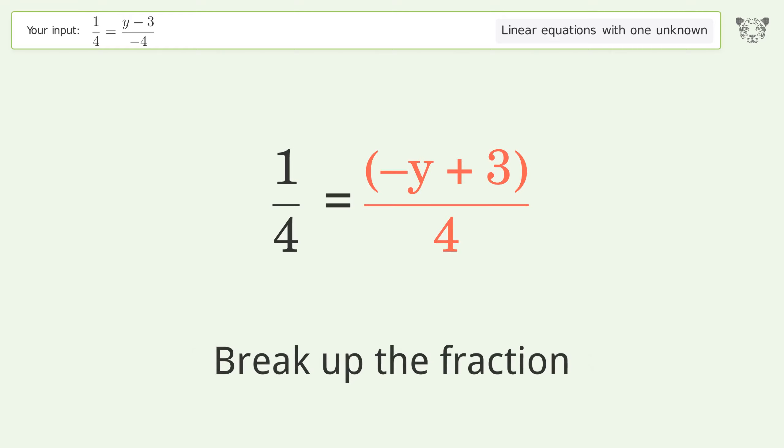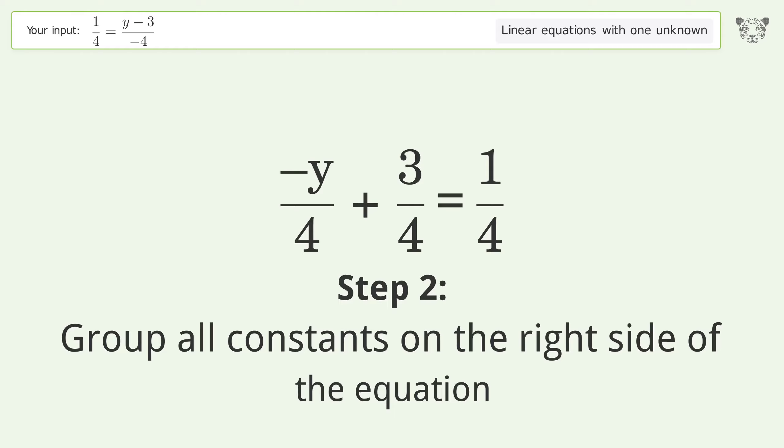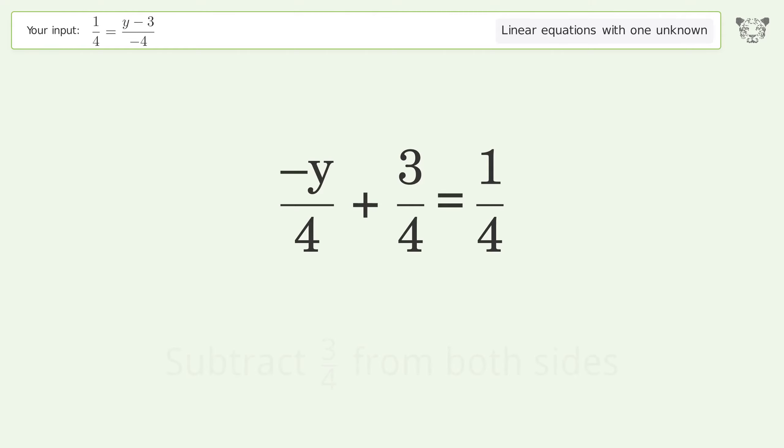Break up the fraction. Swap sides. Group all constants on the right side of the equation. Subtract 3 over 4 from both sides.